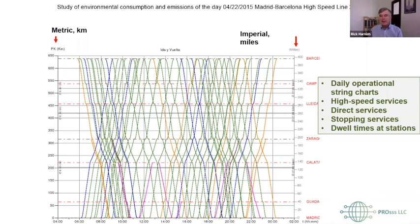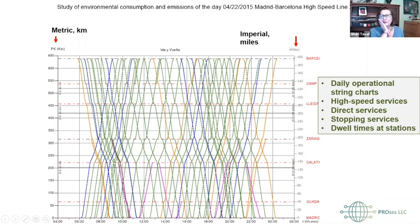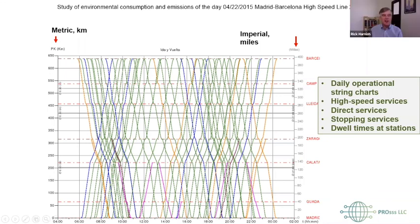Just an interesting side note: JR Central's main dispatcher has to draw the string line by hand every day — even though it's all automated. They do it in order to force discipline of understanding what's going to be happening.